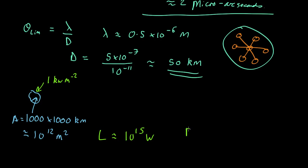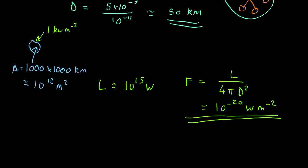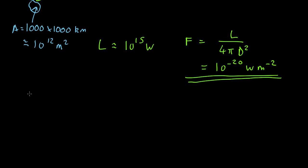So we can therefore work out the flux at the Earth, which is given by the normal equation of the luminosity over 4π distance squared. This D is not the diameter of the telescope, it's the distance to the planet, which we're assuming is 10 light years away. And that comes out as about 10^-20 watts per meter squared, which is very small. We're not going to power a light bulb with solar electricity from that.